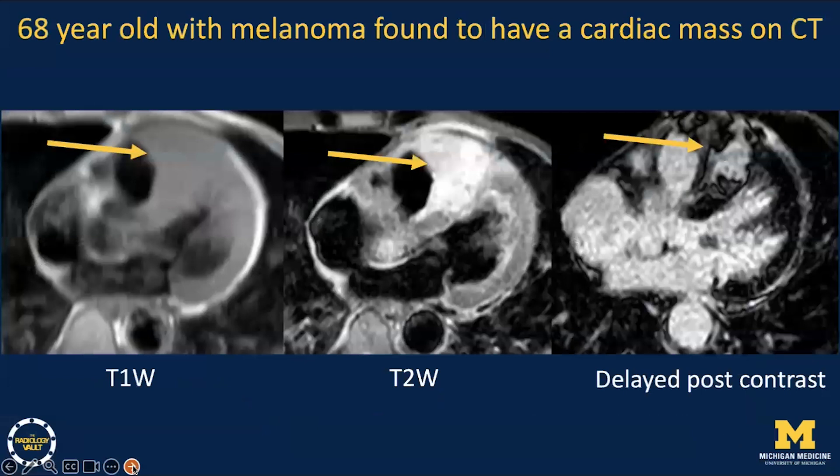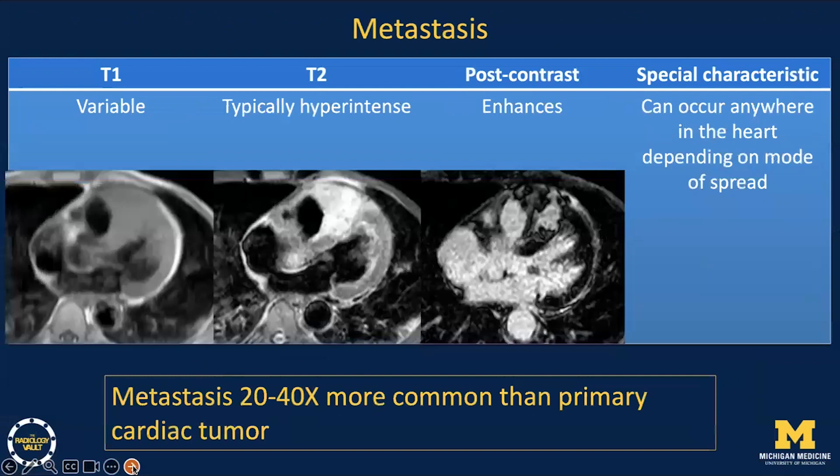Our next case is a 68-year-old with history of melanoma found to have a cardiac mass on CT. The best diagnosis in this case is metastasis. Metastasis can have variable signal on T1-weighted sequences, but are typically hyperintense on T2-weighted sequences. Metastases enhance and can occur anywhere in the heart depending on their mode of spread. Remember, metastases are 20 to 40 times more common than primary cardiac tumors, so in patients with history of underlying malignancy, a metastasis should be a primary diagnostic consideration.